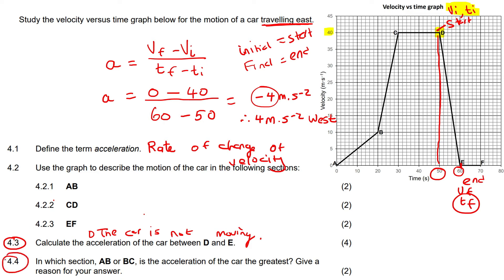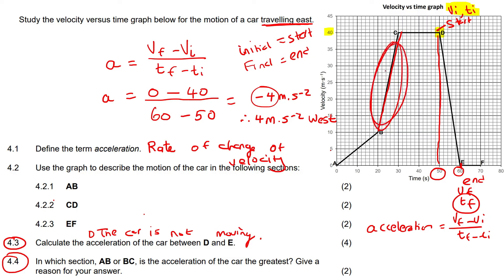This question asks: in which section, AB or BC, is the acceleration the greatest? We know acceleration is change in velocity over change in time. You might also remember that acceleration is the gradient of the velocity-time graph. So immediately you would know the answer is BC, because it has the steepest gradient. If acceleration is the gradient, then BC has the greatest acceleration.